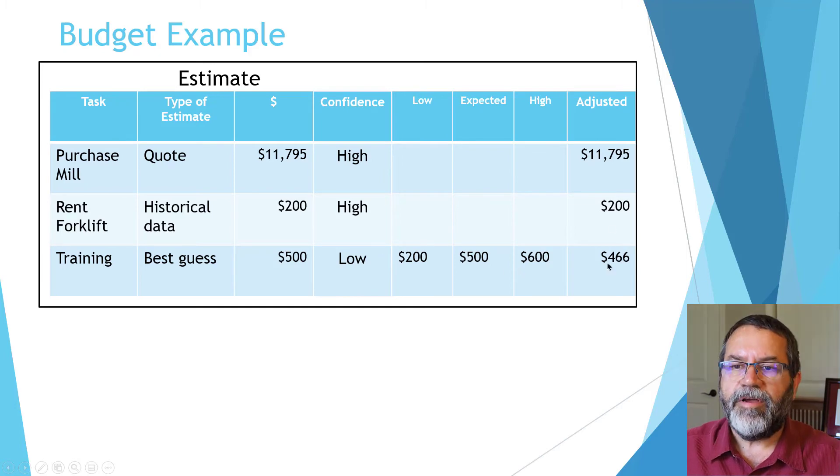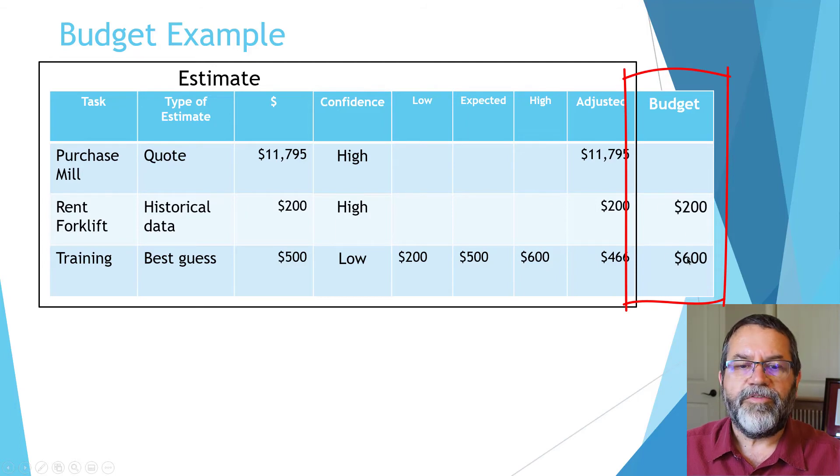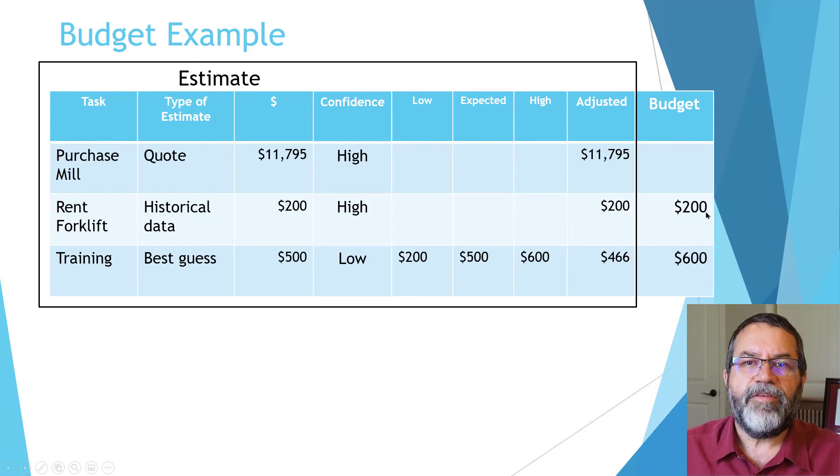We'll take that same estimate with my mill, forklift rental, and training. For my budget, I'll add a column here. The forklift rental is simple—I'll carry across $200. Training, though, I'm going to make another adjustment. The estimate came up with $466, but I know training has been in increasing demand lately. I'm going to go with the high estimate and plug in $600 in my budget.